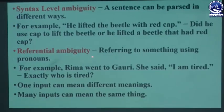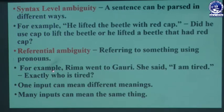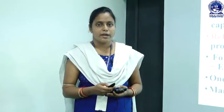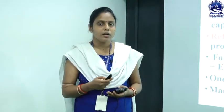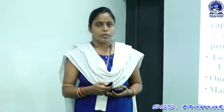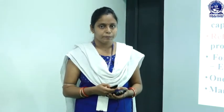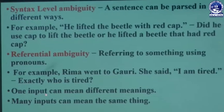Next is referential ambiguity, which involves referring to something using pronouns. For example: 'Rima went to Gauri. She said, I am tired.' Here, who is tired — Rima or Gauri? This gives us ambiguity, called referential ambiguity. Additionally, one input can mean different things and many inputs can mean the same thing. When one sentence means two different things or two different sentences mean one thing, we also call this referential integrity. For all these ambiguities, NLU is harder to understand.